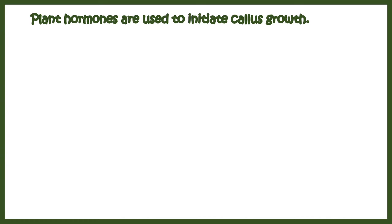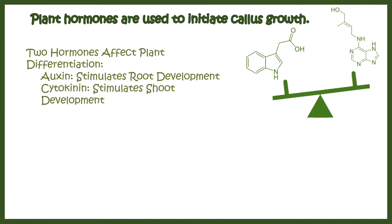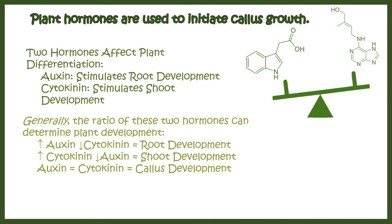Plant hormones induce callus formation. The relative balance of auxin and cytokinin determines growth outcomes: if auxin is high and cytokinin is low, root development is augmented; if cytokinin is high and auxin is low, shoot development is preferred; but if auxin and cytokinin are in an equivalent 1:1 ratio, callus development is induced.